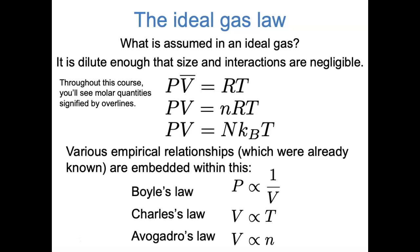In a previous video on statistical mechanics, we already motivated the ideal gas law starting from single particle energy levels and quantum mechanics. But historically, the ideal gas law came from empirical relationships: Boyle's law — the inverse relationship between pressure and volume; Charles's law — the direct relationship between volume and temperature; and Avogadro's law — the direct relationship between volume and number of moles. I'd rather you see that the ideal gas law PV equals nRT implies all of these relationships if you hold certain quantities constant.